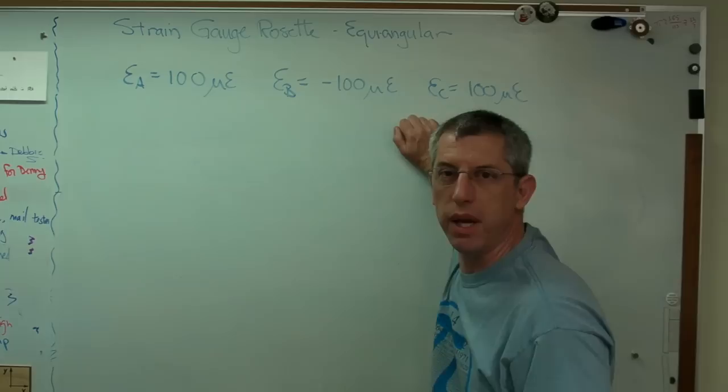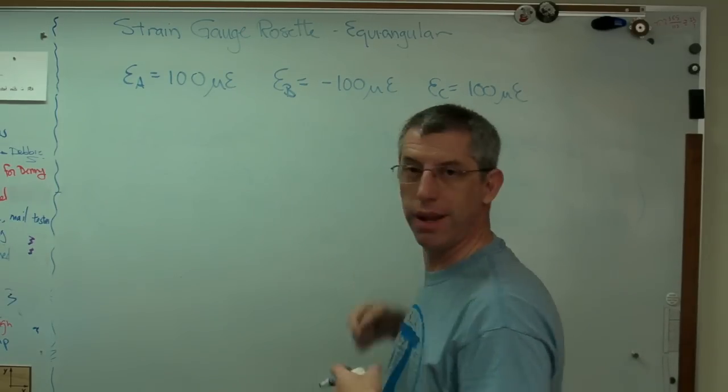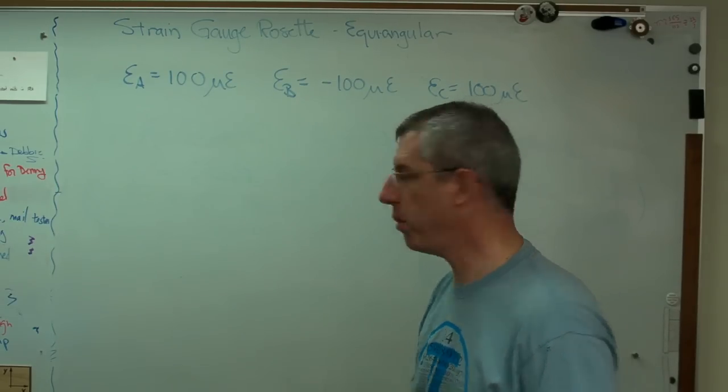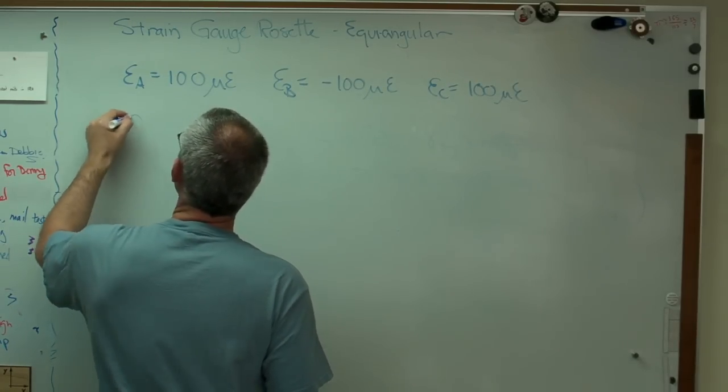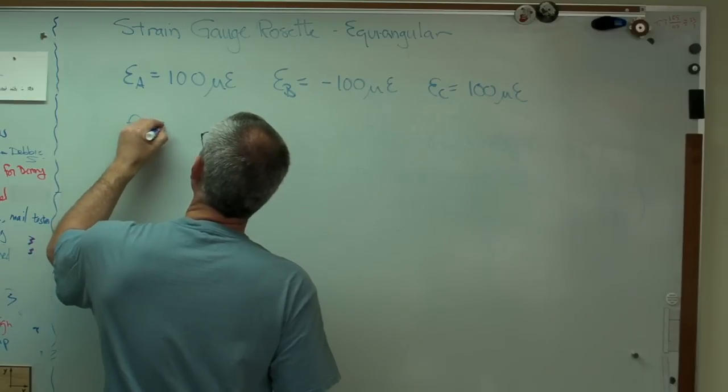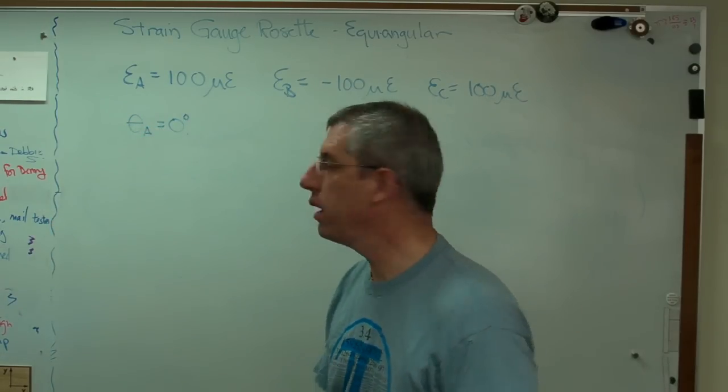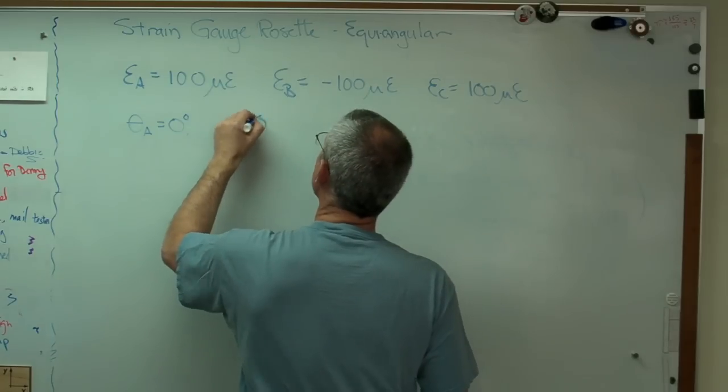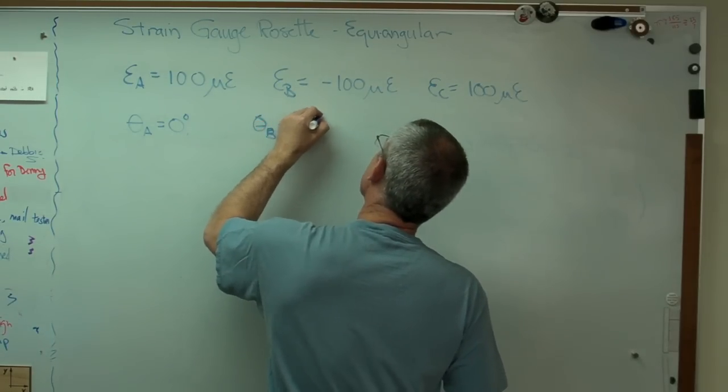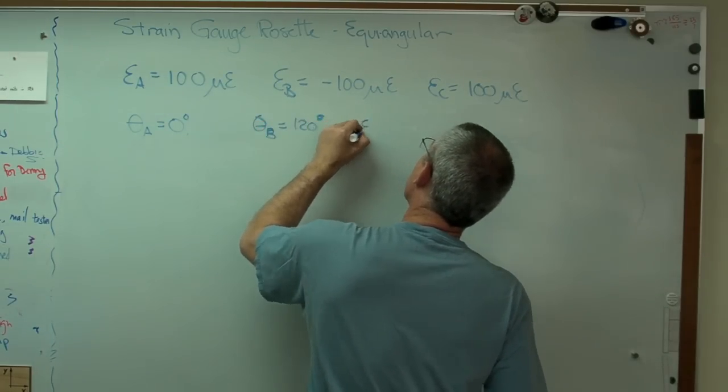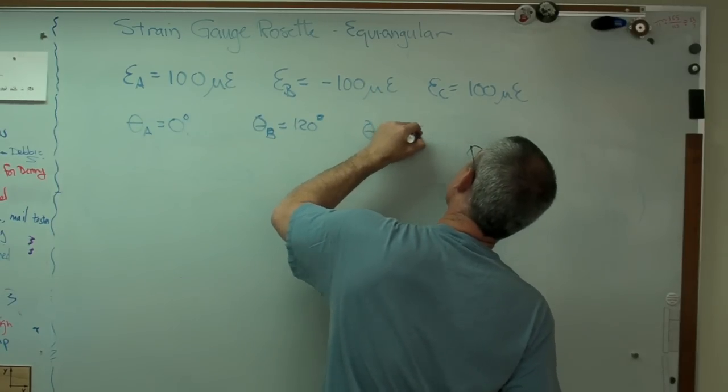Obviously, I'm just making these up. But let's say you measured these off a part. These numbers could be anything. It doesn't change the way we solve the problem. And let's see. Let's also say theta A equals zero degrees. It doesn't have to be. It can be anything. But whatever theta A is, theta B and theta C are pretty much determined now. And so that's going to be 120 degrees. And theta C equals 240 degrees.